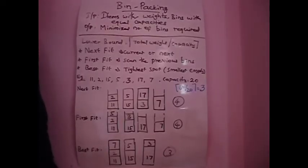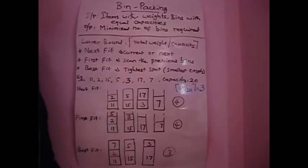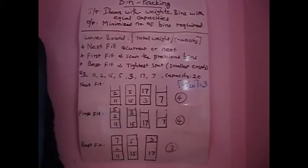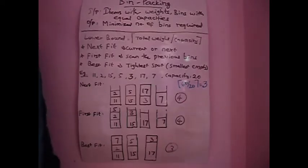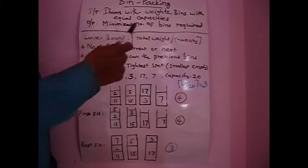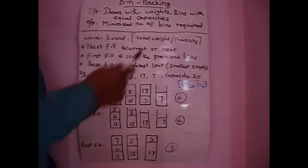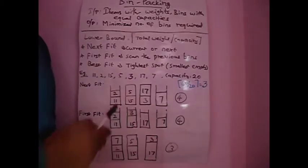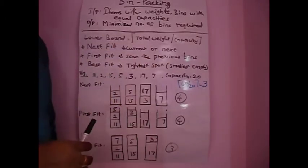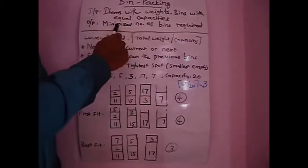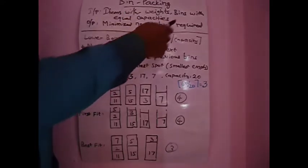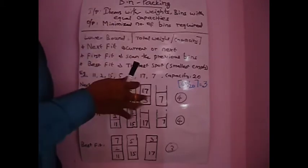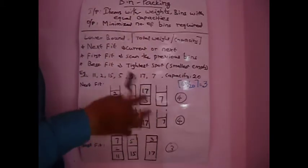In this video we are going to discuss the bin packing problem and three ways in which we can solve it. It's one of the approximation problems where we find a solution up to some approximation. We are given some items and their weights, and bins with equal capacities. The aim is to find the minimum number of bins required to accommodate all the items.